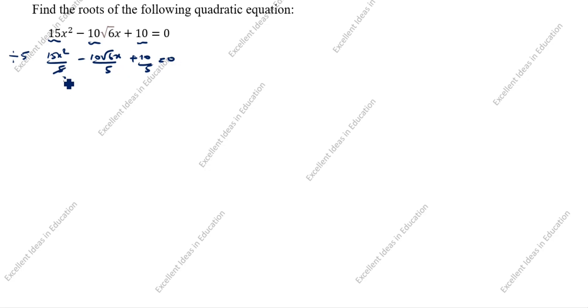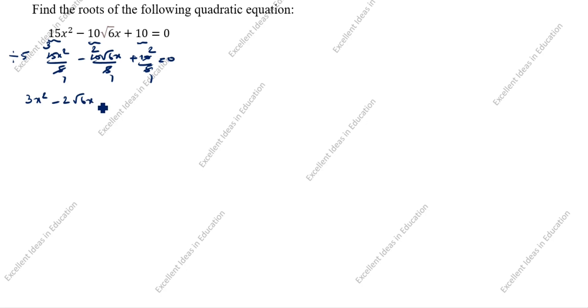After dividing each term by 5, the simplified equation becomes 3x² minus 2√6·x plus 2 equals 0.